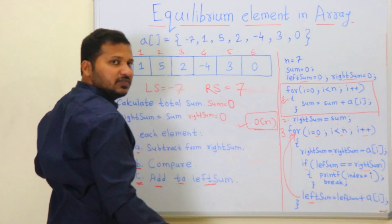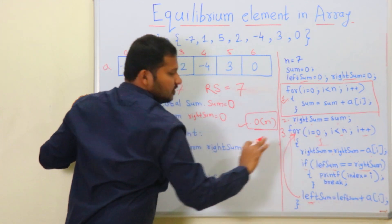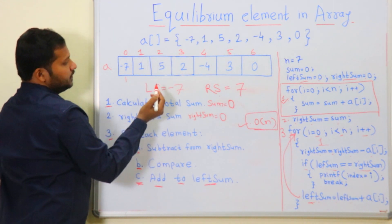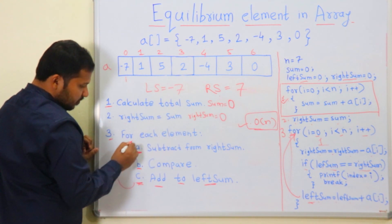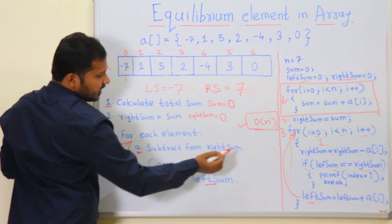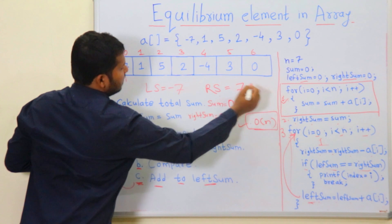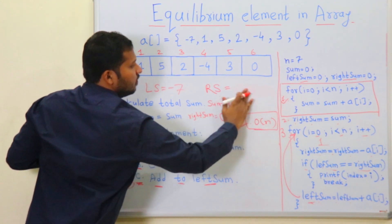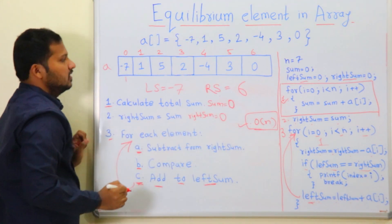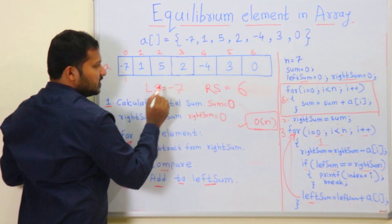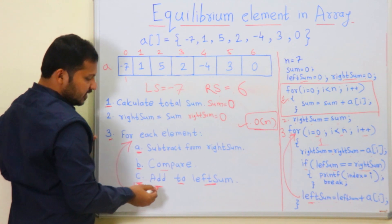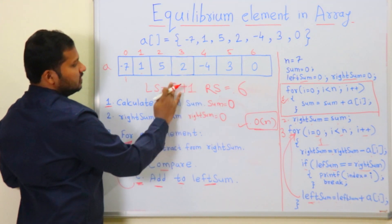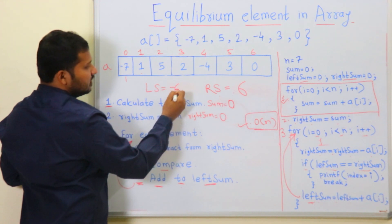Next iteration, i = 1, element = 1. Subtract from right_sum: 7 - 1 = 6. Compare: left_sum (-7) equals right_sum (6)? No. Add to left_sum: -7 + 1 = -6. End of second iteration.